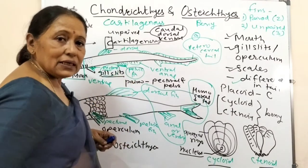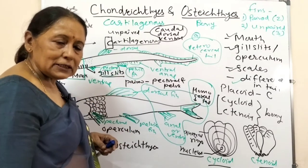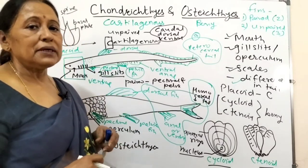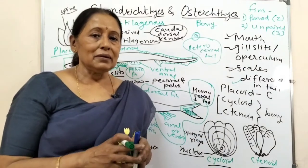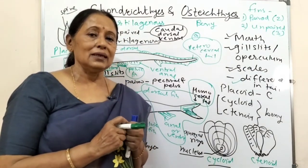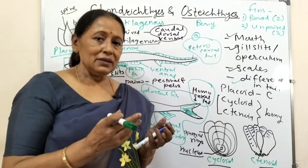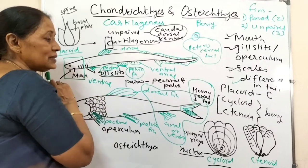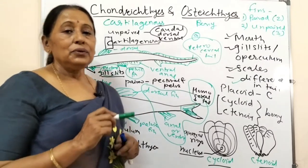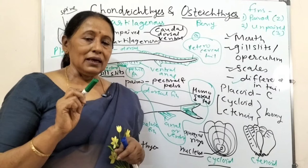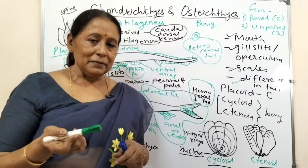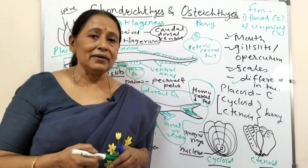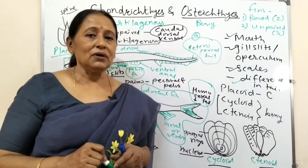The pelvic fin of male cartilaginous fishes bears claspers - organs by which the male holds the female during copulation. This means fertilization is internal in cartilaginous fishes. In bony fishes, no claspers are present in males because fertilization is external. Bony fishes are oviparous - they lay eggs.